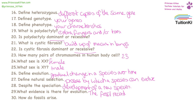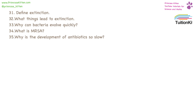Fossils form from the bones and the hard bits of the body, as the soft bits of the body decay away. Extinction is a process of species dying out. A large number of things can lead to extinction — it could be hunting, it could be an increase in prey, a decrease in food, or a change in the environment.